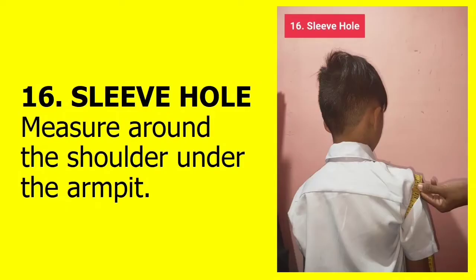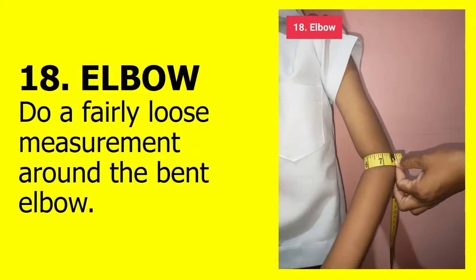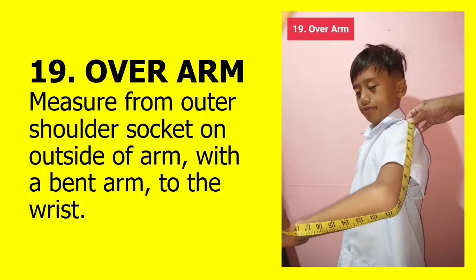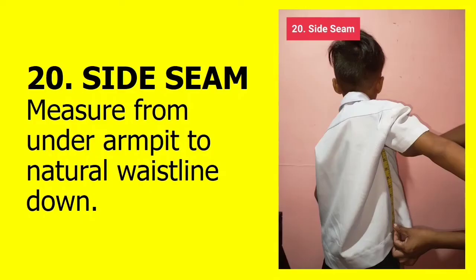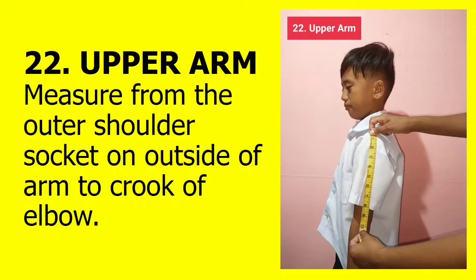Sixteen, sleeve hole: measure around the shoulder under the armpit. Seventeen, bicep: measure around the fullest part of the upper arm. Eighteen, elbow: do a fairly loose measurement around the bent elbow. Nineteen, overarm: measure from outer shoulder socket on the outside of arm with a bent arm to the wrist. Twenty, side seam: measure from under armpit to natural waistline down. Twenty-one, underarm: measure from outer shoulder socket on outside of arm with a bent arm to the wrist. And lastly, twenty-two, upper arm: measure from the outer shoulder socket on the outside of arm to the crook of elbow.